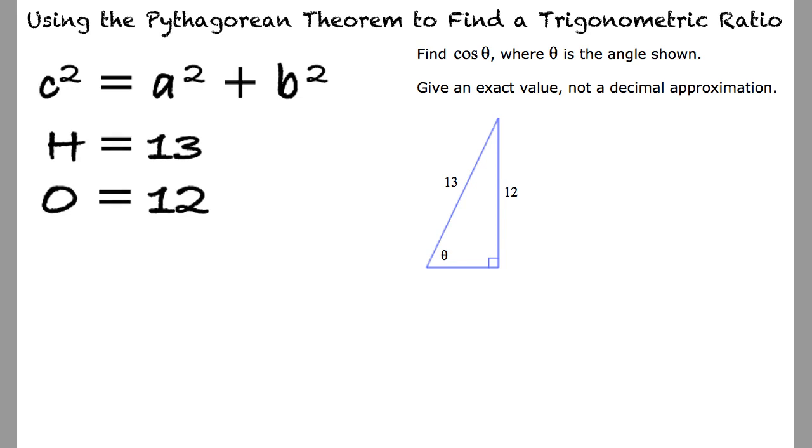Exactly. Let's substitute the given values into the Pythagorean theorem, yielding adjacent side equals square root of 13 squared minus 12 squared, which equals 5.